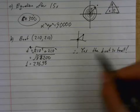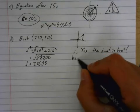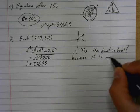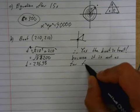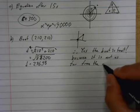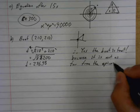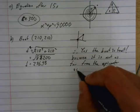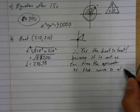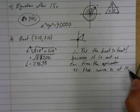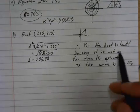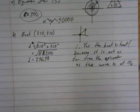the boat is toast. Because it said explain, so because it is not as far from the epicenter as the wave is at 15 seconds. There's a good explanation. The boat has been hit. This distance to the boat is less than the distance the wave has traveled.